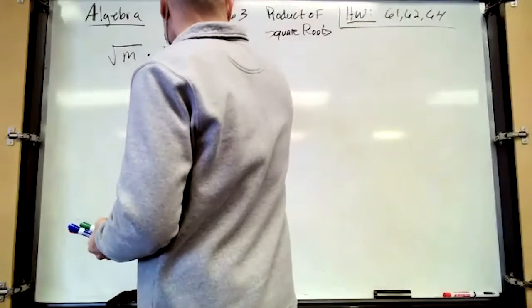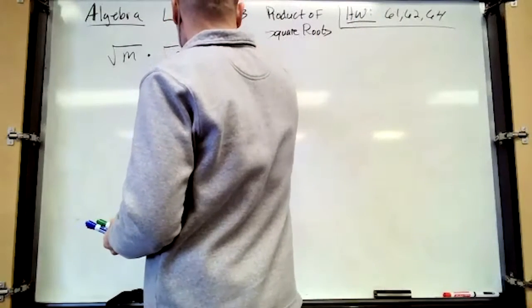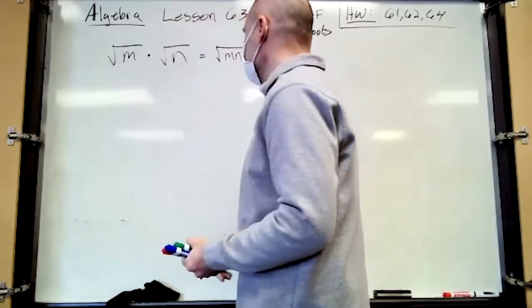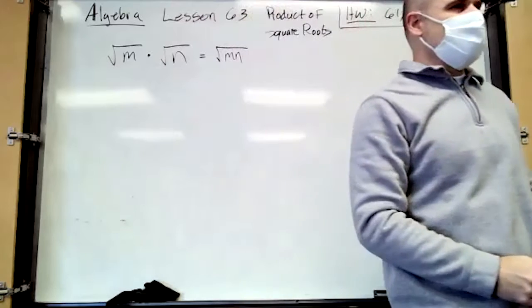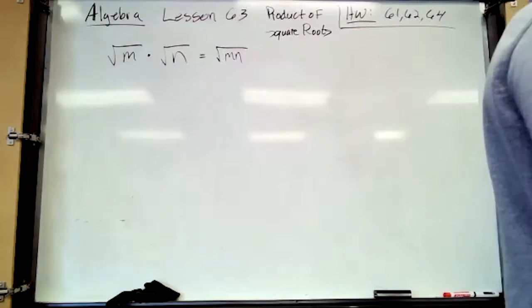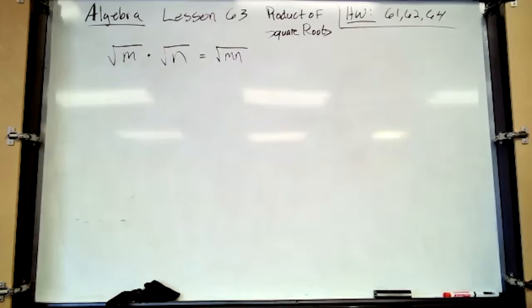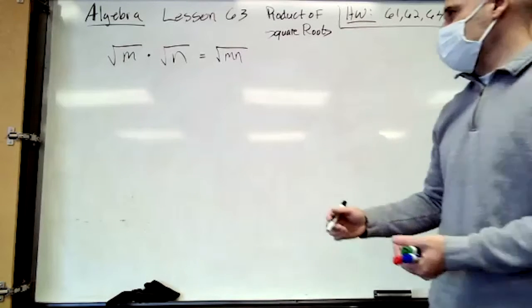So this is the square root of M times N inside the radical. So square root of five times the square root of two would be the square root of 10, right?